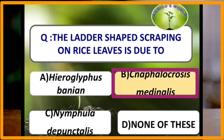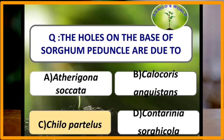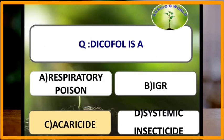The ladder-shaped scraping on rice leaves is due to Cnaphalocrocis medinalis. The holes on the base of sorghum peduncle are due to Chilo partellus stem borer.